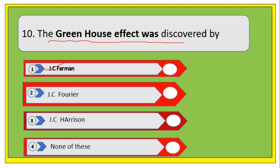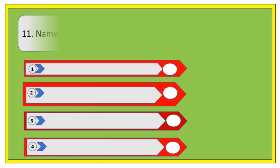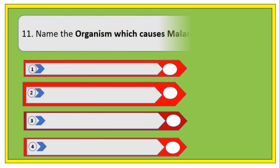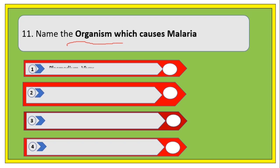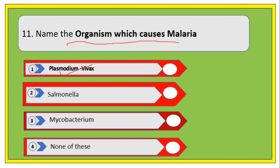The greenhouse gas effect was discovered by whom? Options are J.C. Firman, J.C. Fourrier, J.C. Harrison, or none of these. The right answer is J.C. Fourrier.